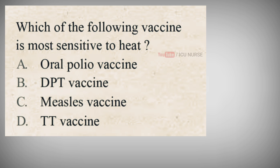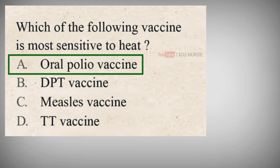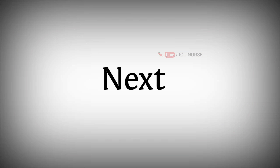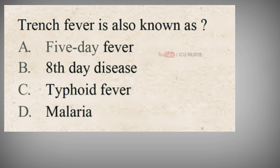Which of the following vaccine is most sensitive to heat? A. Oral polio vaccine, B. DPT vaccine, C. Measles vaccine, D. TT vaccine. The correct answer is A. Oral polio vaccine. Oral polio vaccine is the most sensitive to heat.